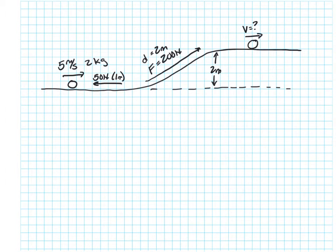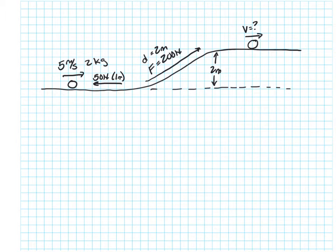Let's look at this example problem to see how to involve work in this conservation of energy concept. What work does is work adds or removes energy from our system. So instead of just having kinetic energy equal to potential energy, now we'll have work to change the total energy. We'll start with some kind of energy to begin with — that's its total energy — and then we'll either add or subtract energy, and that'll equal the final energy. Physicists call it work, so work is really their fancy way of saying the change in energy.